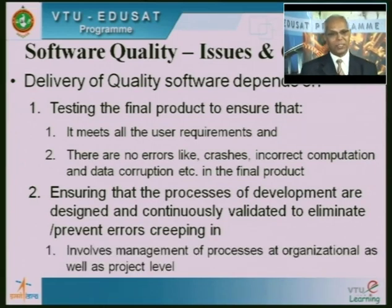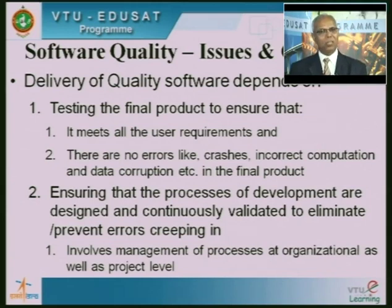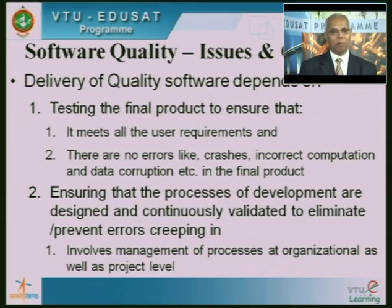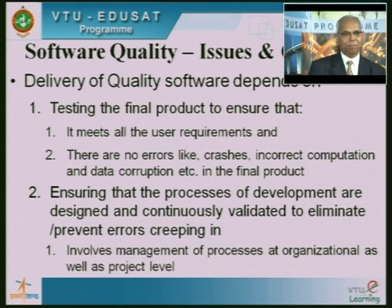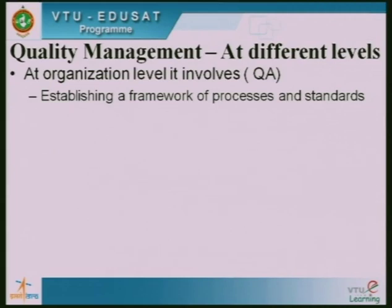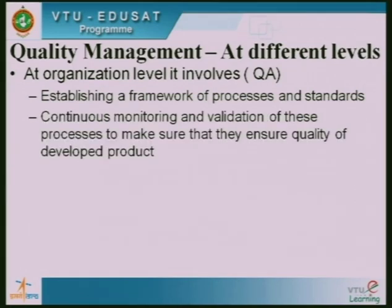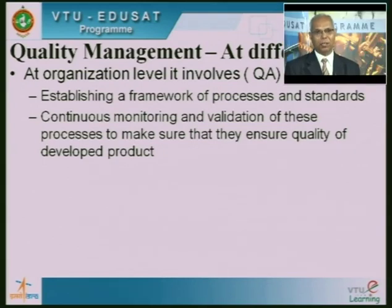Quality management involves management of processes at both organizational and project levels. At an organizational level, for all the software developed by a company, certain methods and standards are followed — that is how we define organizational standards. Quality management at the organizational level involves QA: establishing a framework of processes and standards, defining how processes should be run and what standards to follow. Continuous monitoring and validation of these processes to ensure quality of the developed product is another important activity of QA.